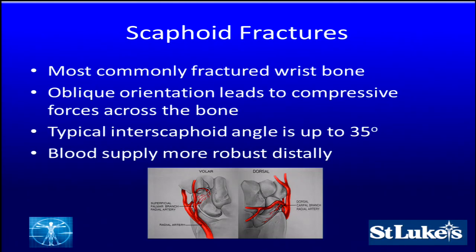Scaphoid fractures are the most commonly fractured wrist bone. They have an oblique orientation, which leads to compressive forces across the bone and tends to lead to fractures. Due to their oblique nature, they need to be visualized slightly differently since they sit off axis to the standard 90-90 x-rays that we take. The typical intrascaphoid angles — taking a line down the mid-portion of the distal pole and up the proximal pole — can be accepted up to 35 degrees.